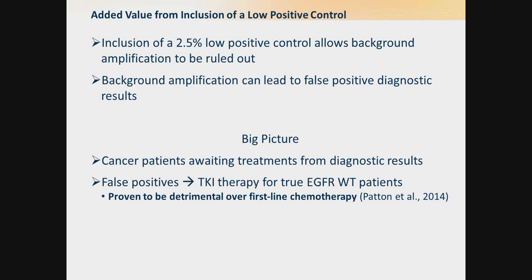Since on the other side of every FFPE sample being processed is a cancer patient awaiting treatment results or a treatment course, we know that any false positive means that a tyrosine kinase inhibitor will be given to a patient who is actually wild type for EGFR — and this is really detrimental to their care over first-line chemotherapy.